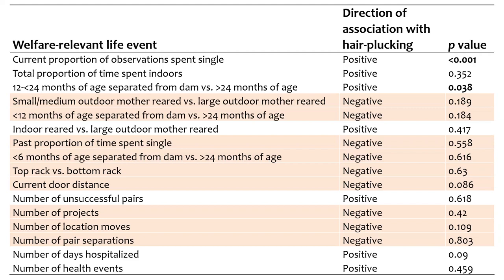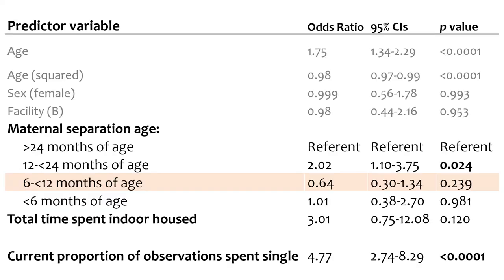The final best-fitting model for hair plucking revealed that most of these relationships were not very influential. Instead, the best-fitting model comprised only three welfare-relevant life events while controlling for sex, age, and facility: maternal separation age, years spent indoors, and current proportion of observations spent single. Time spent indoor-housed across one's lifetime increased the odds of hair plucking, though not significantly, while current time spent single-housed significantly increased the odds. Monkeys separated from the dam between 12 to under 24 months of age showed significantly higher odds of hair plucking compared to those separated at 24 months or later.